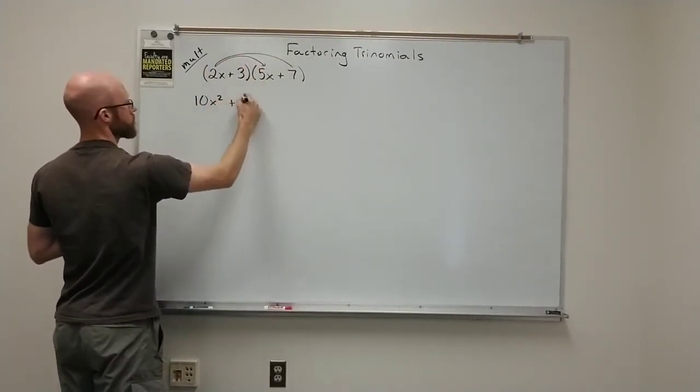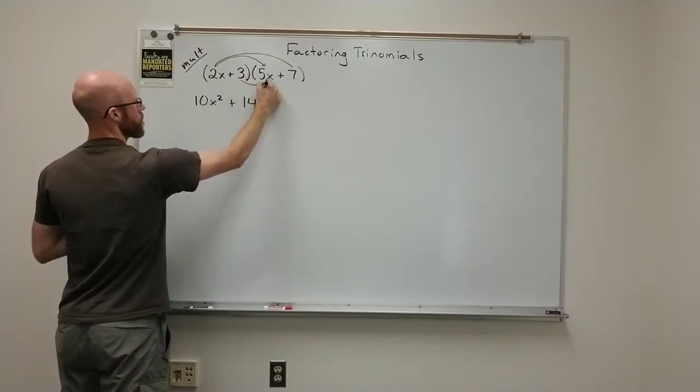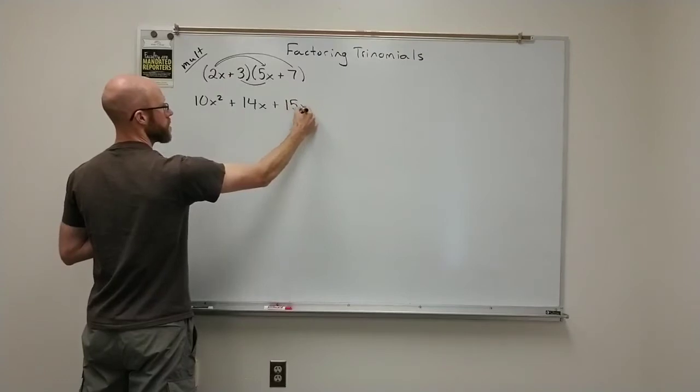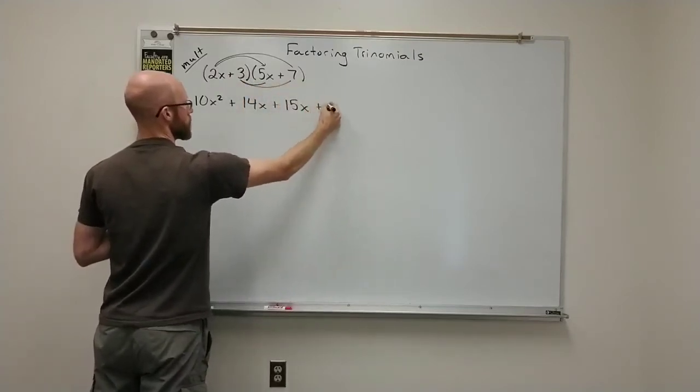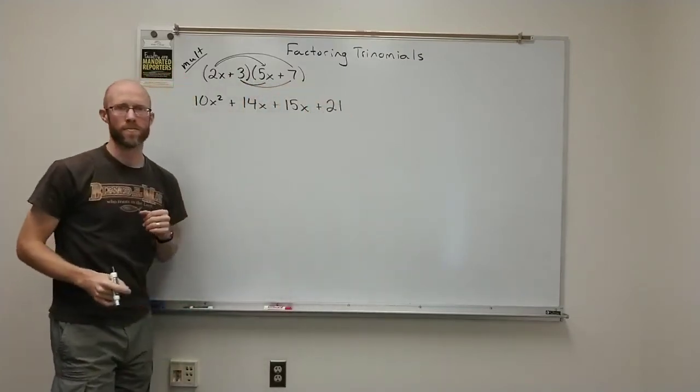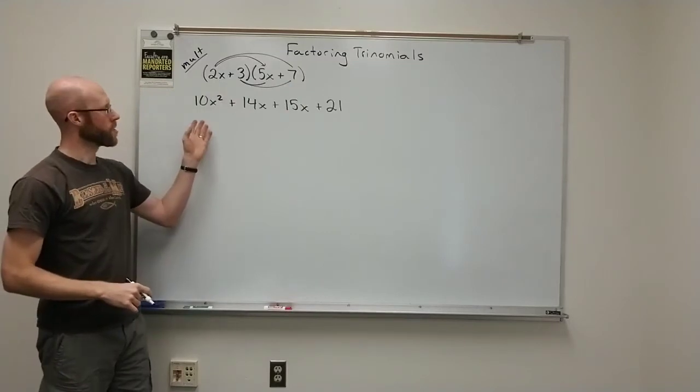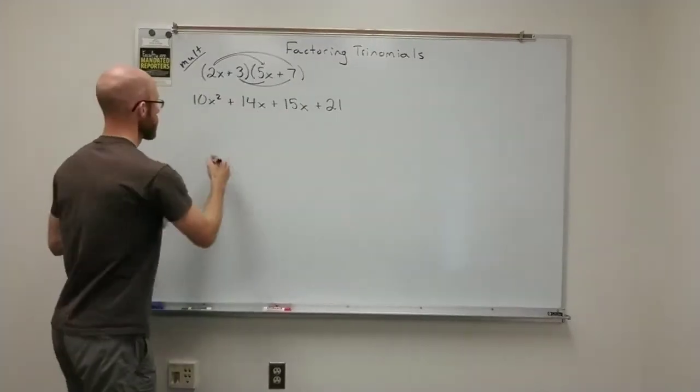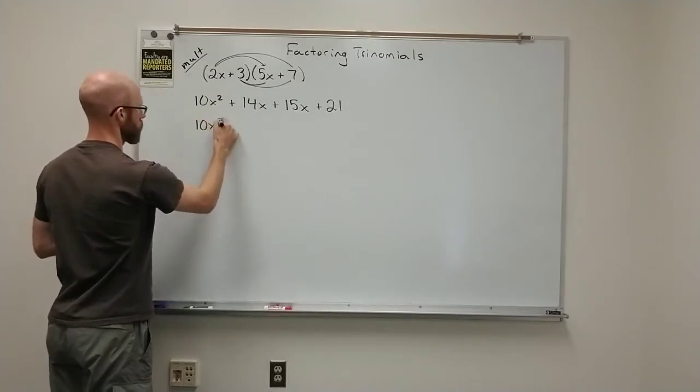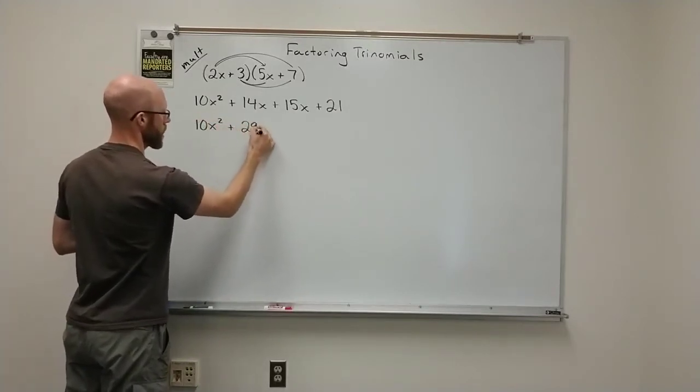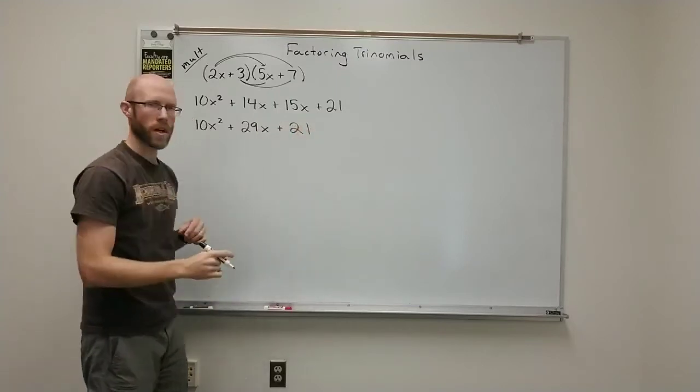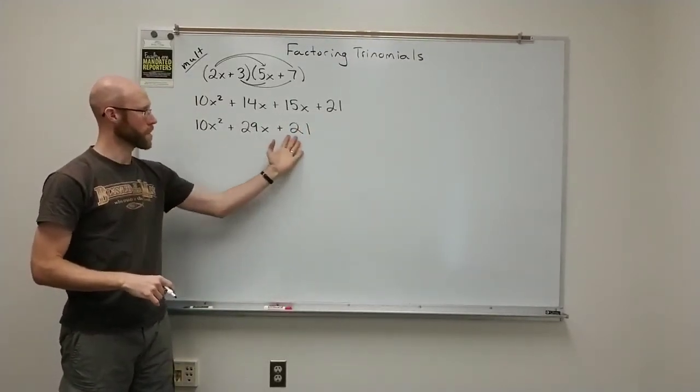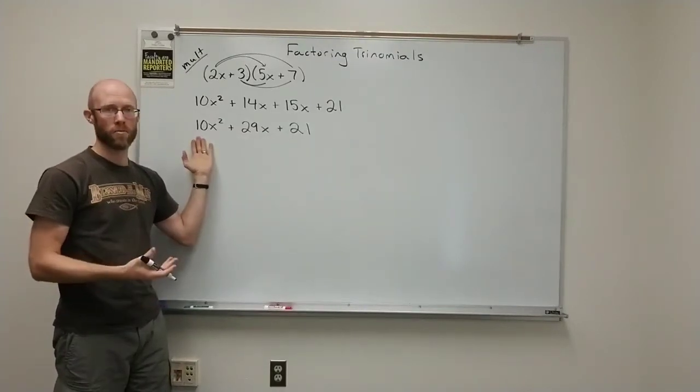2x times 7 is 14x, 3 times 5x is 15x, and 3 times 7 is 21. And so, of course, I could combine the two terms in the middle. So I'll have 10x² plus 29x plus 21. So yeah, this would be our final multiply form.